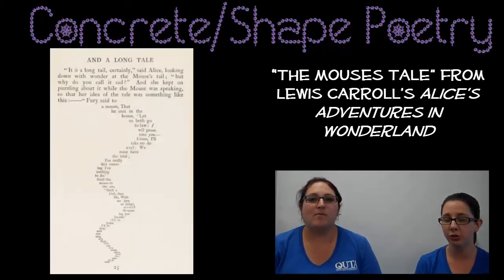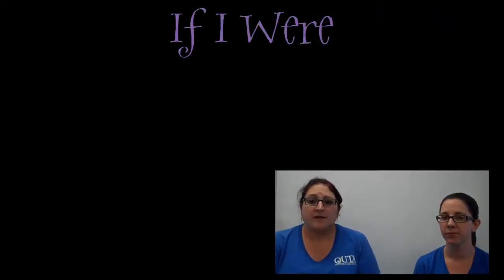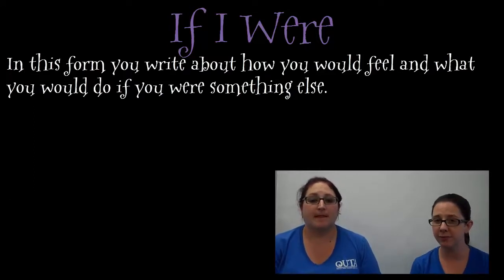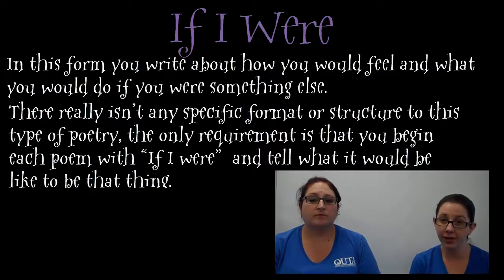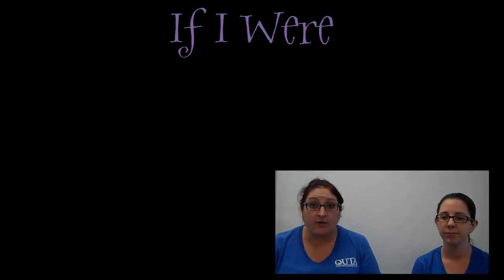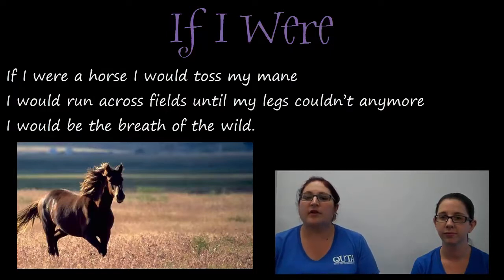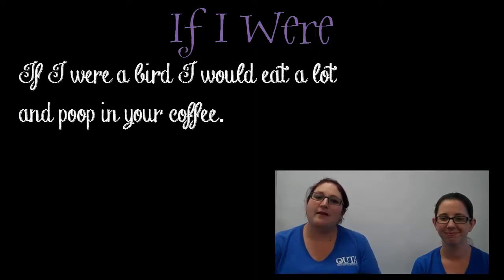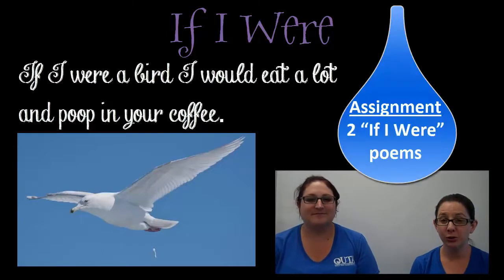The final type of poetry for today is called If I Were. In this form you write about how you would feel and what you would do if you were something else. There really isn't any specific format or structure to this type of poetry. The only requirement is that you begin each poem with 'If I Were' and tell what it would be like to be that thing. Here are a few examples. 'If I were a horse, I would toss my mane. I would run across fields until my legs couldn't anymore. I would be the breath of the wild.' Here's another example from one of my students: 'If I were a bird, I would eat a lot and poop in your coffee.' Good thing you're not a bird. You will be writing two If I Were poems.